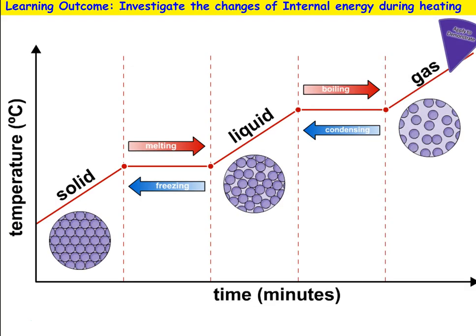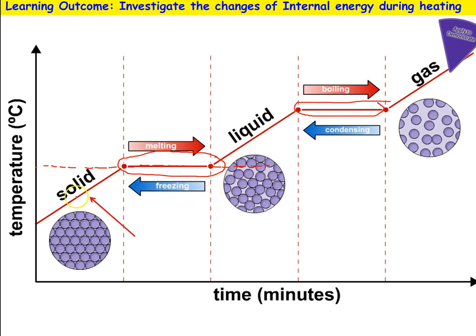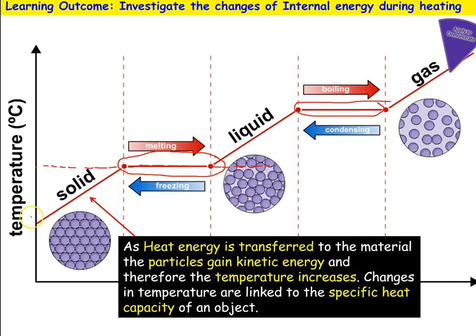This is a heating curve — it shows what happens to temperature when we heat a solid and then change state to liquid. You can see the graph becomes flat — it plateaus at the stage when we get a change in state. Going upward, a heating curve shows melting then boiling; coming back down as a cooling curve, it would be condensing and freezing. During the sloped parts of the graph, heat energy is transferred to the particles and they gain kinetic energy. Temperature is the average kinetic energy of the particles, so if we transfer more heat, kinetic energy and temperature both increase.